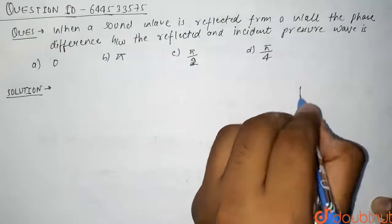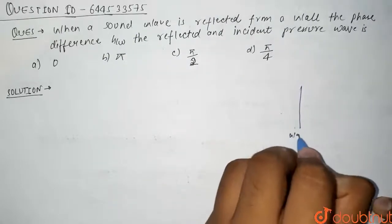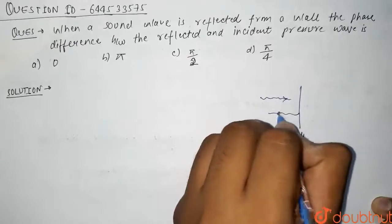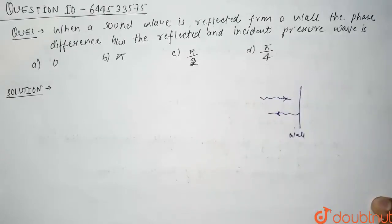So in this question we have been given that this is a wall and the sound wave is coming like this. After reflecting back from the wall, what is the change in its phase difference?